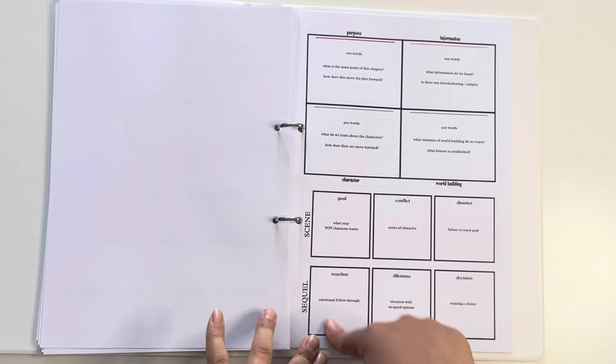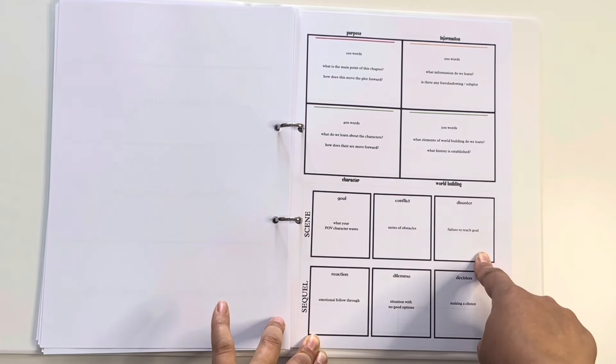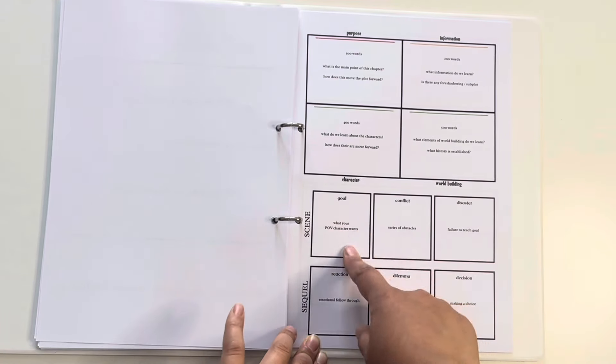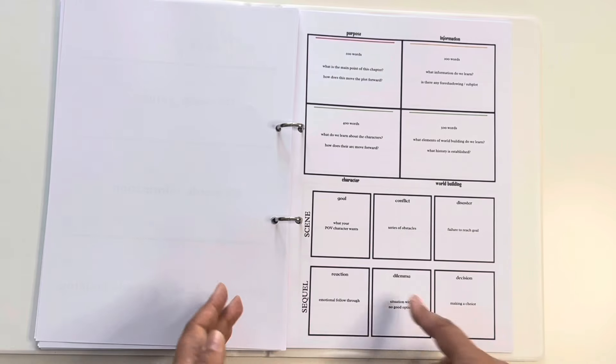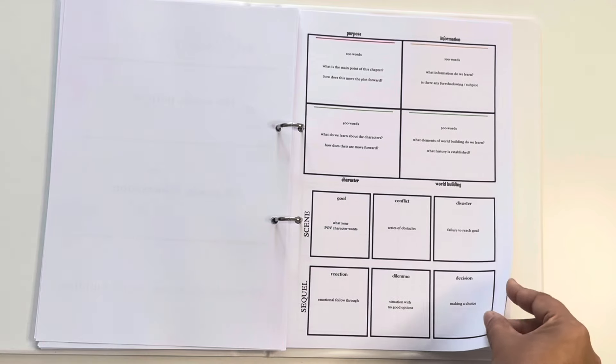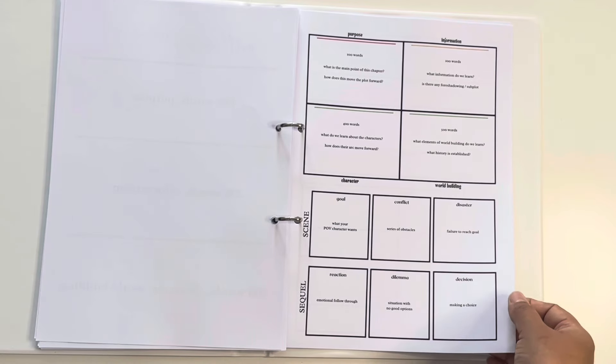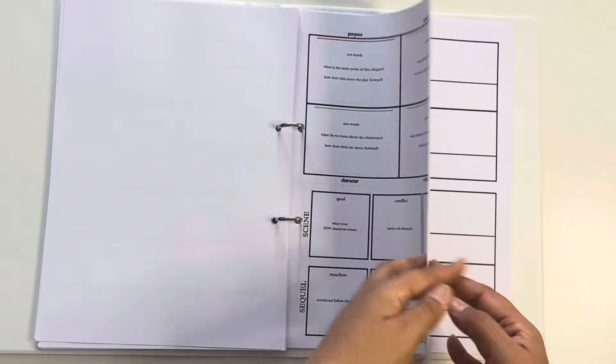And then this is just how I want my scenes to go. Each scene needs a goal, a conflict, a disaster, and then each sequel. So the next scene needs a reaction, a dilemma, and a decision, which I suppose will help me plotting out the events and everything that I need to plot out.